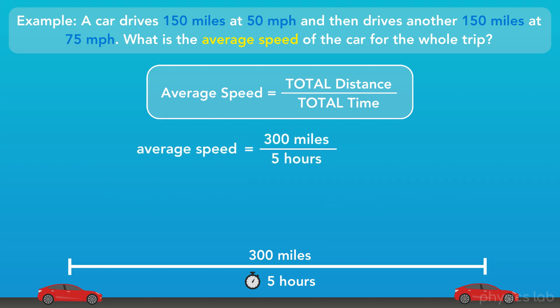Now, we can calculate the average speed of the car for the entire trip, which equals 60 miles per hour. So, that is the actual average speed that this problem is asking us to find.